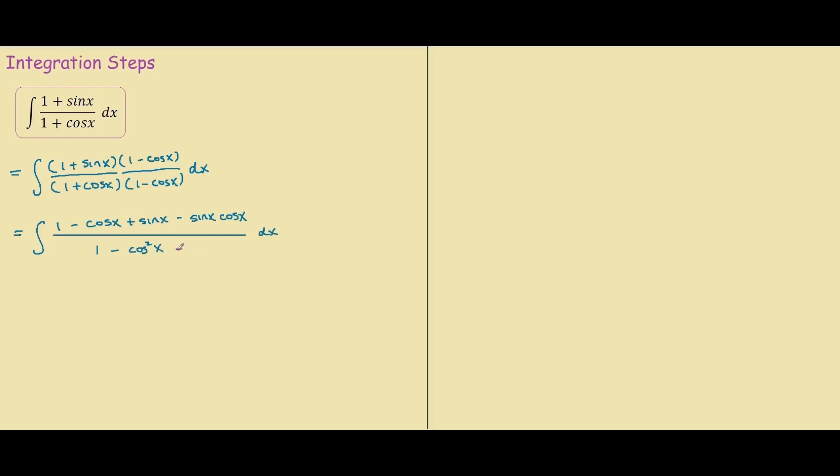And from our trig identity, we know that 1 minus cosine squared x is the same thing as sine squared x.